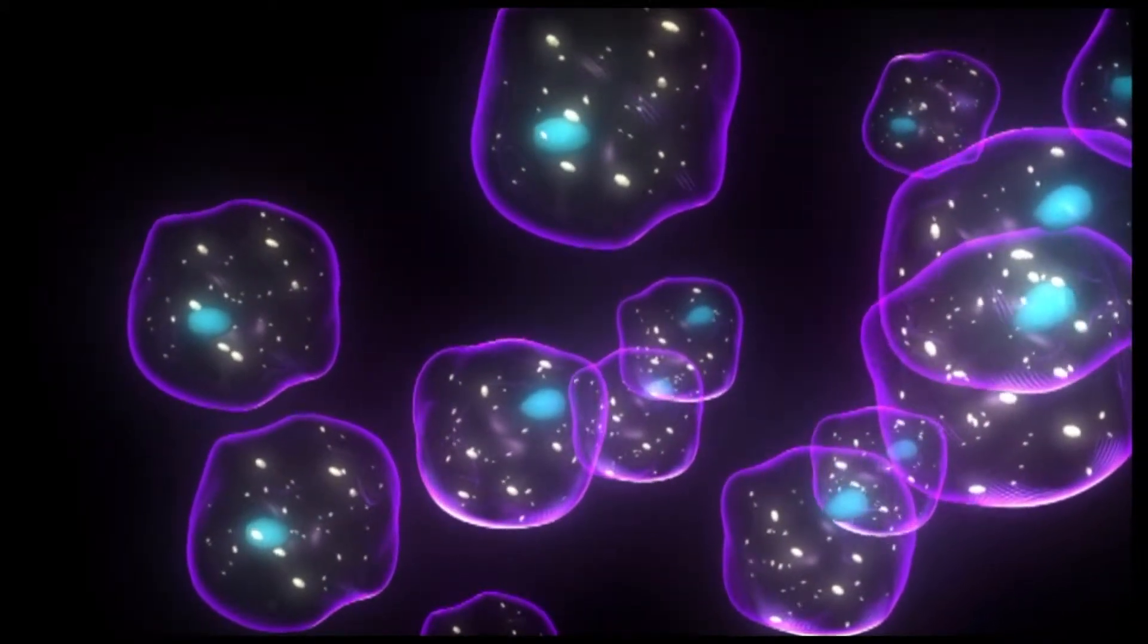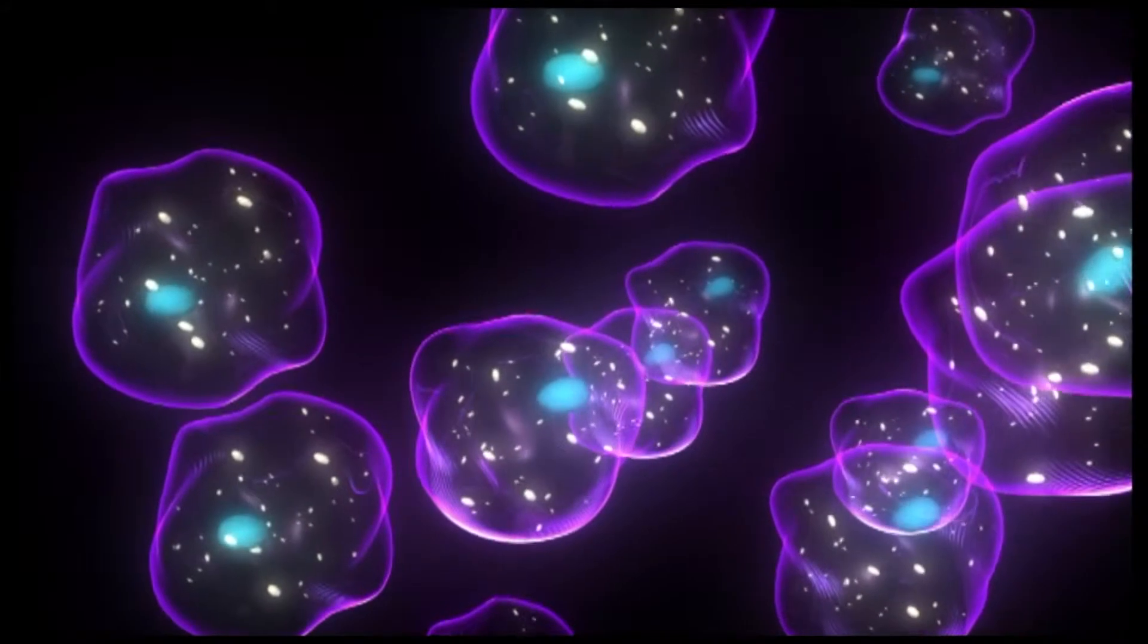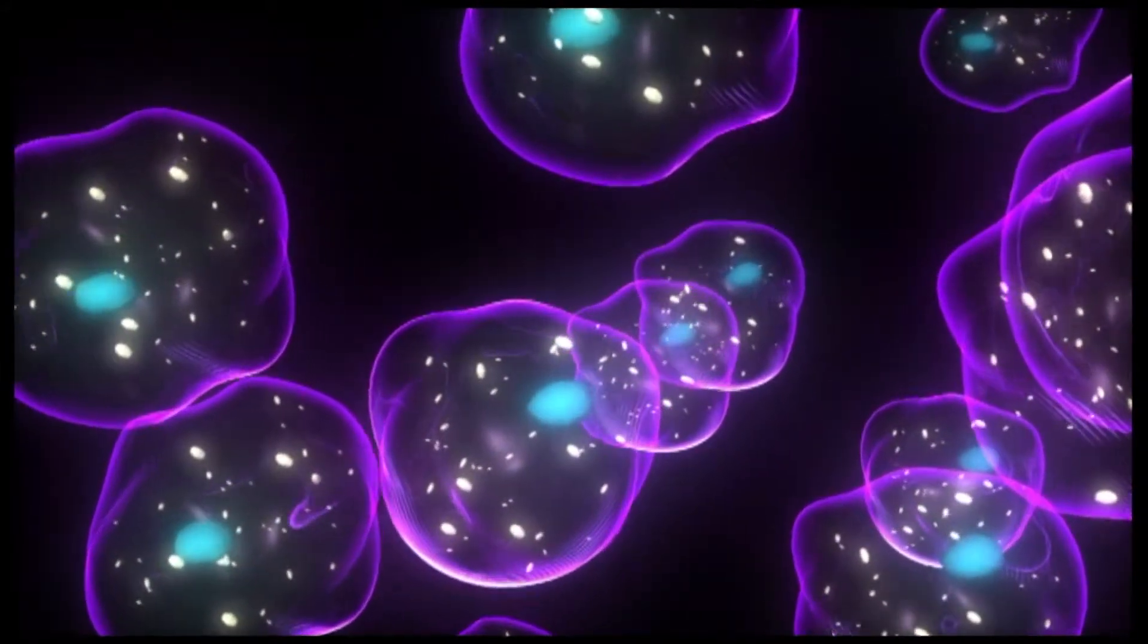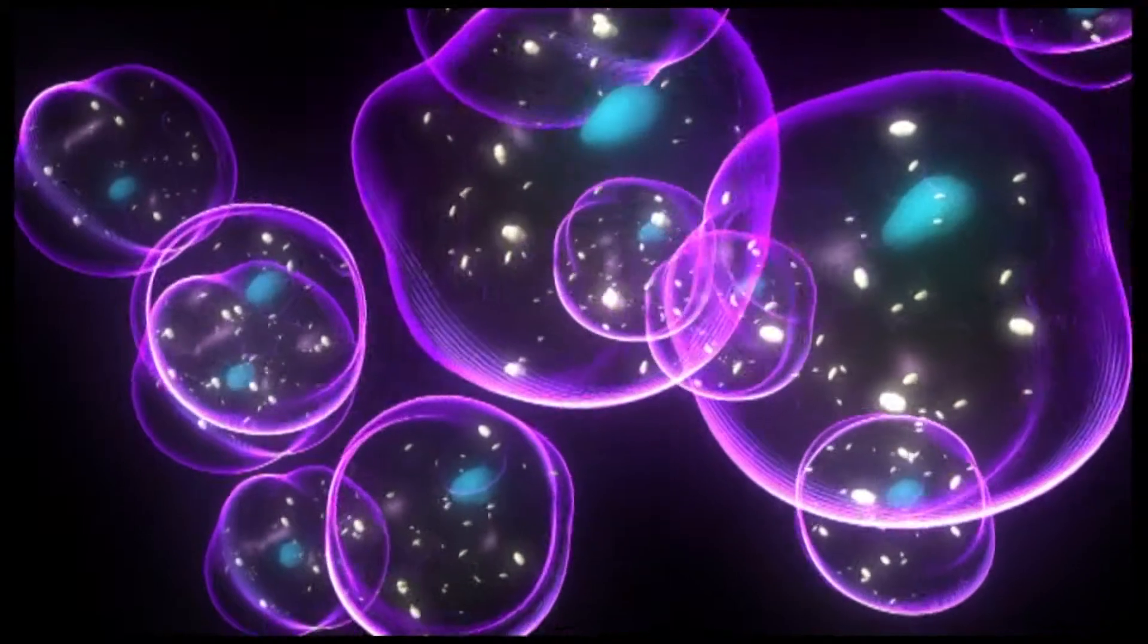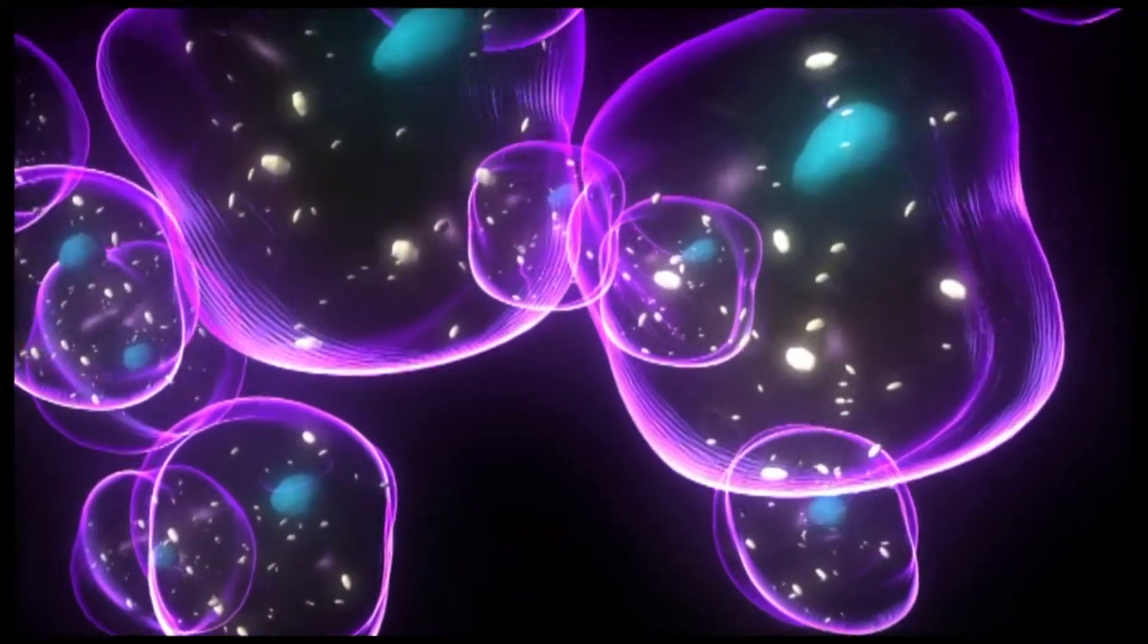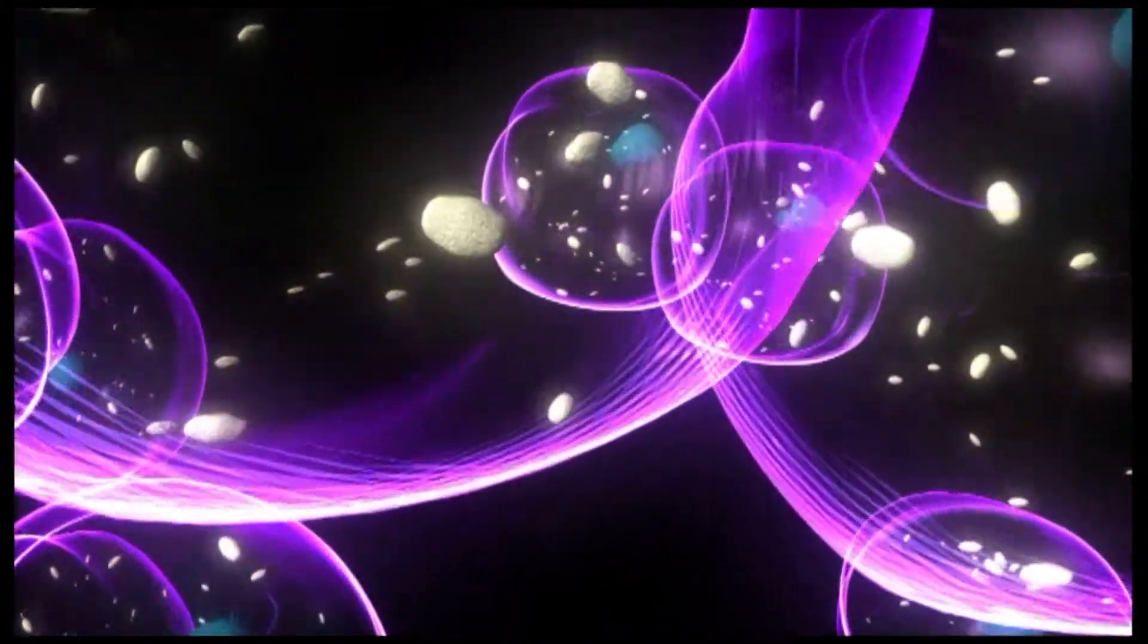Most eukaryotic cells follow a process of growth and division called the cell cycle. The cell cycle has two key stages, interphase and the mitotic phase.